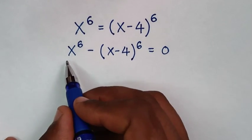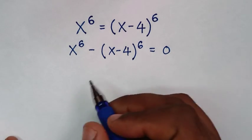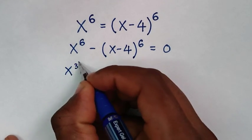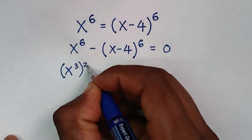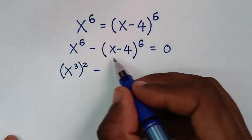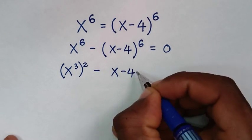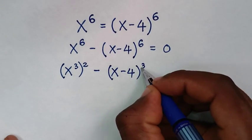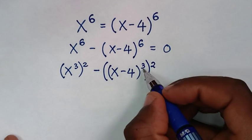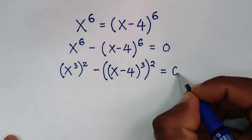Then in the next step, from the left side we'll make this in the form of a perfect square. So x power 6 is (x power 3) squared, then minus (x minus 4) power 6 is (x minus 4) power 3, bracket, power 2. Because power 3 times 2 is power 6.